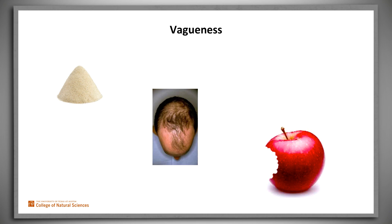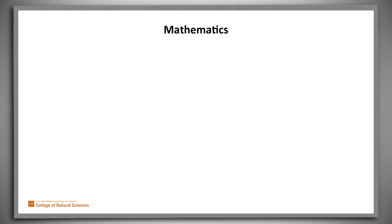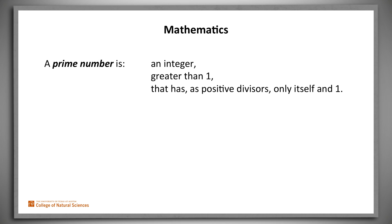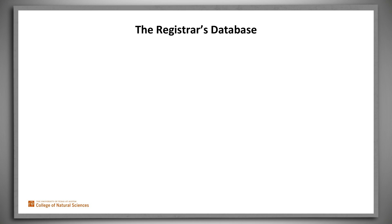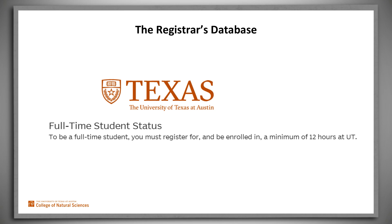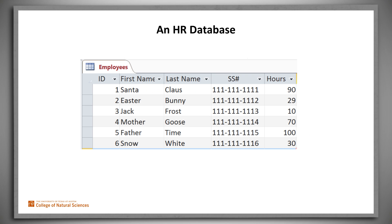We define it away. Mathematicians cannot work with vague predicates. They're very careful to provide precise definitions of the terms they use. For example, a prime number is an integer greater than one that has no factors except itself and one. This definition clears up any confusion about boundary cases. Database designers do the same thing. Our university's registrar defines full-time student to be someone enrolled for 12 hours or more — 11 hours simply isn't, 12 is. In an HR database, we might define benefits-eligible as someone who works at least 30 hours a week — 29 isn't enough, 30 is.